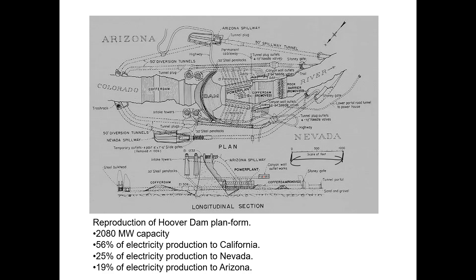This is a reproduction of the Hoover Dam plan form. Hoover Dam has a total capacity of just over two gigawatts. On average it produces more than 50% of the energy needs for California, 25% for Nevada, and up to 20% for Arizona. It was built in the 1930s and is still heavily depended upon, close to 100 years after its construction.